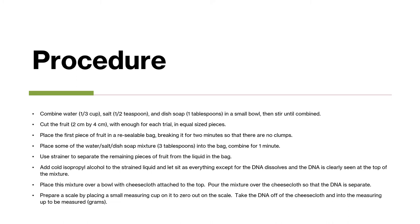The procedure is to combine water, salt, and dish soap in a small bowl and then stir until combined. Cut the fruit with enough for each trial in equal sized pieces. Place the first piece of fruit in a resealable bag, breaking it for two minutes so that there are no clumps. Place some of the water, salt, and dish soap mixture into the bag and combine for one minute. Use a strainer to separate the remaining pieces of fruit from the liquid in the bag. Add cold isopropyl alcohol to the strained liquid and let sit as everything except for the DNA dissolves and the DNA is clearly seen at the top of the mixture.